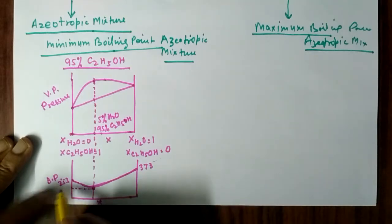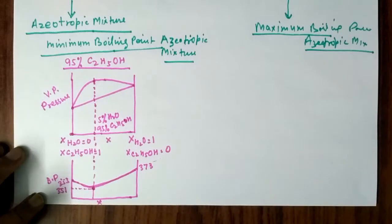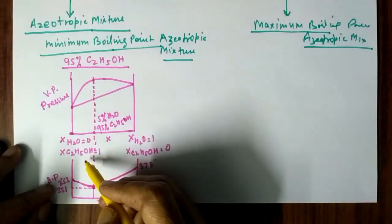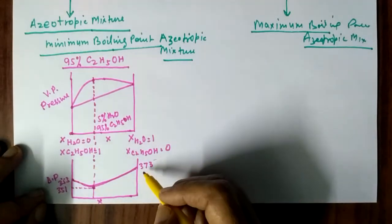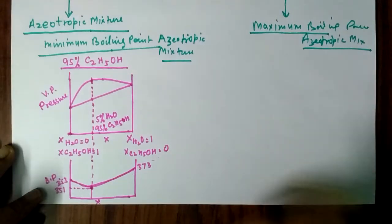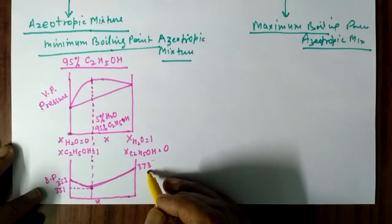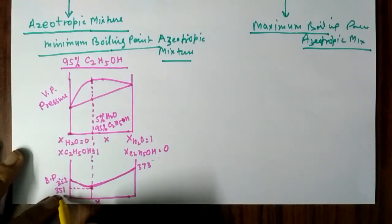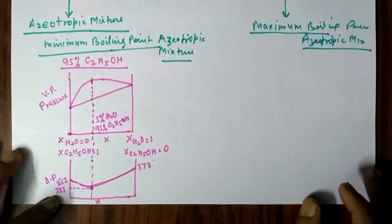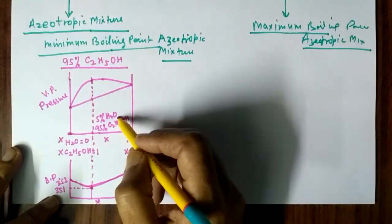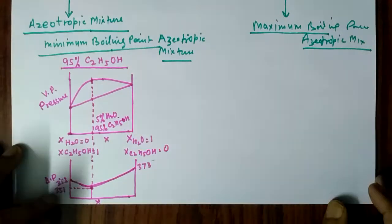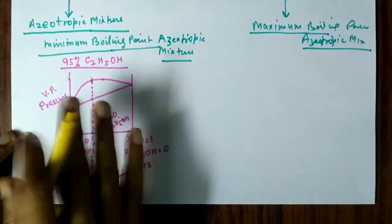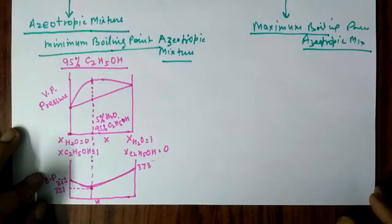The boiling point of this azeotropic mixture is 351 K, which is less than 353 K (boiling point of pure ethanol) and 373 K (boiling point of pure water). The composition at which the azeotropic mixture forms is 5% H₂O and 95% ethanol. This graph explains the formation of a minimum boiling point azeotropic mixture due to positive deviation from Raoult's law.